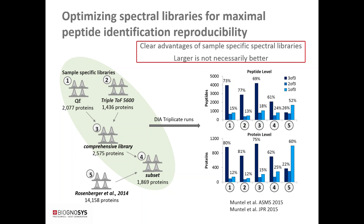The samples used were urine samples, part of a urine biomarker study. Data was acquired on three technical replicates per sample, first on a Thermo Fisher Q Exactive and then on a TripleTOF to create libraries one and two. Library three combines data from libraries one and two, and library five is a publicly available comprehensive human SWATH library covering over 14,000 human proteins. Library three, not library five, yields the best results in terms of peptide and protein IDs with high reproducibility.